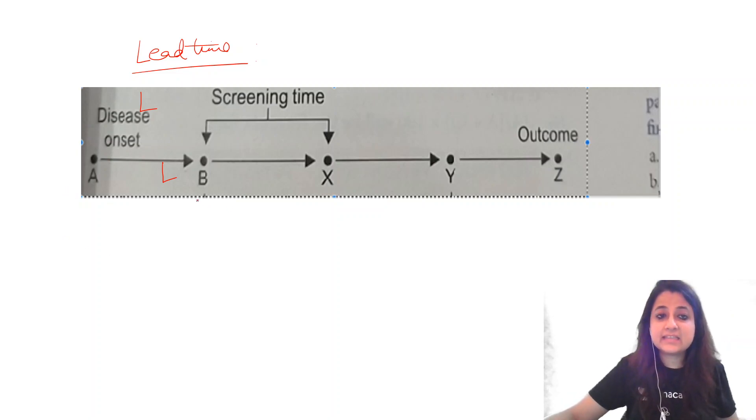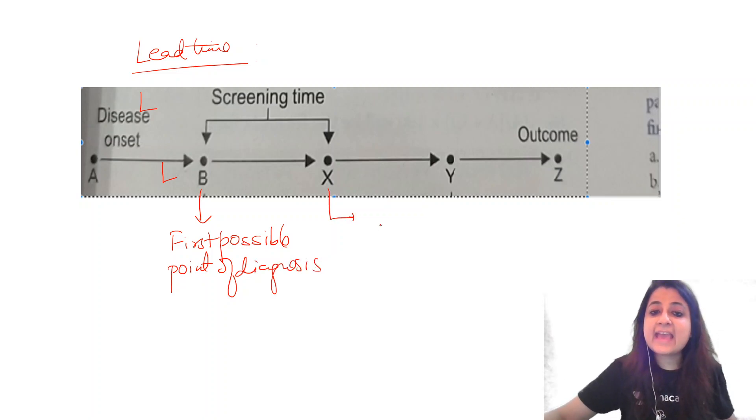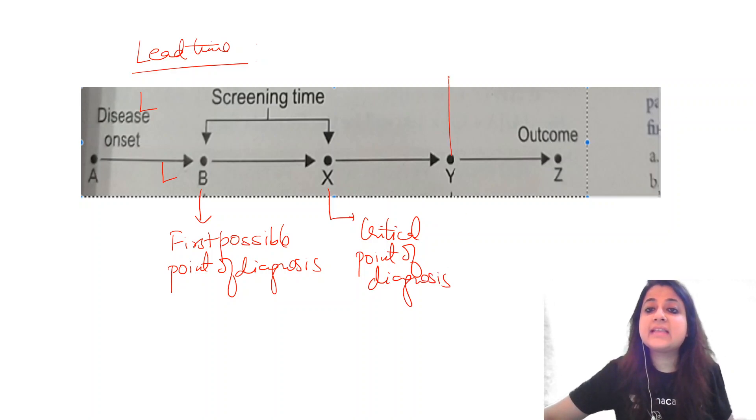A is disease onset. What does B point represent? B point represents first possible point of diagnosis. And what is X? X represents the critical point of diagnosis. And what is Y? Y represents the usual time of diagnosis.